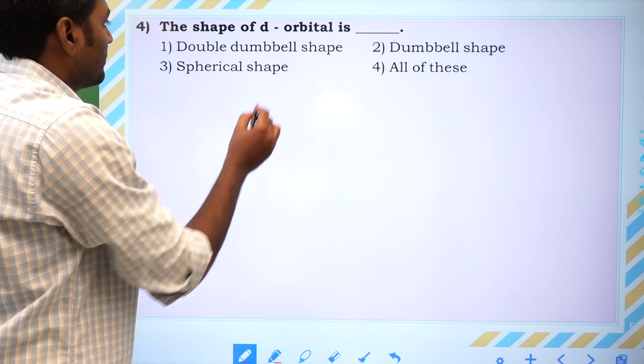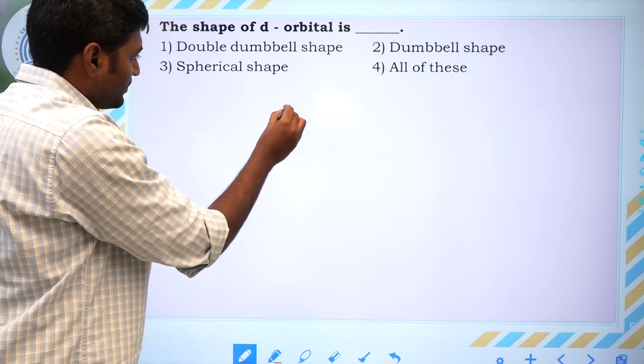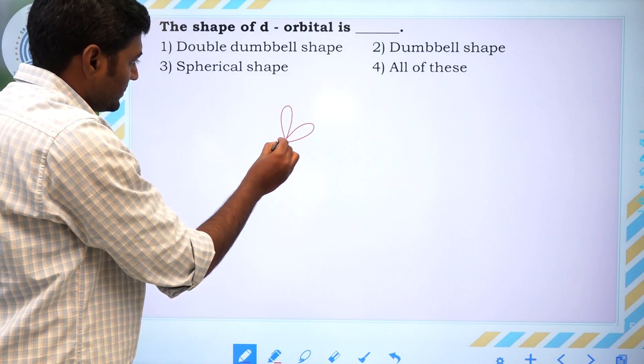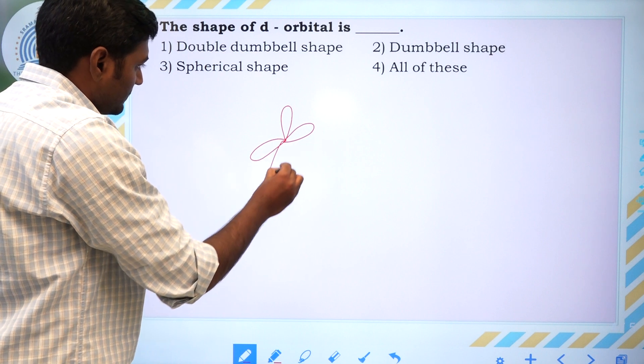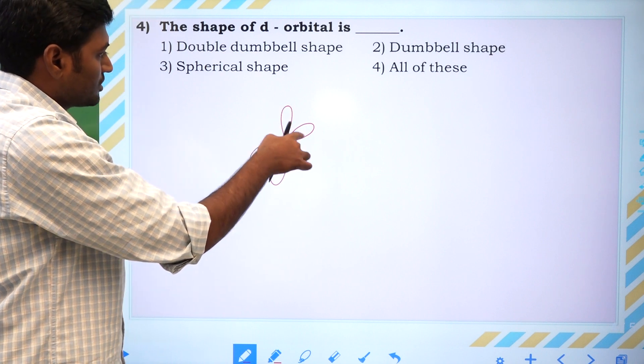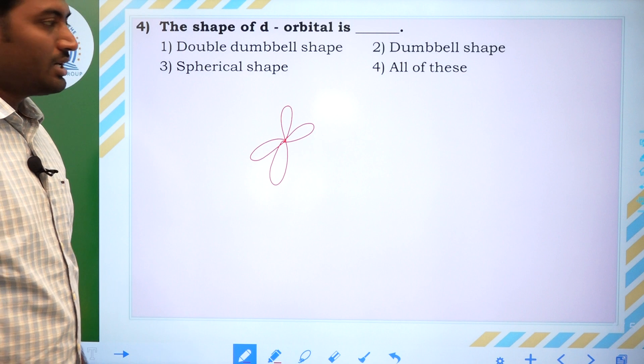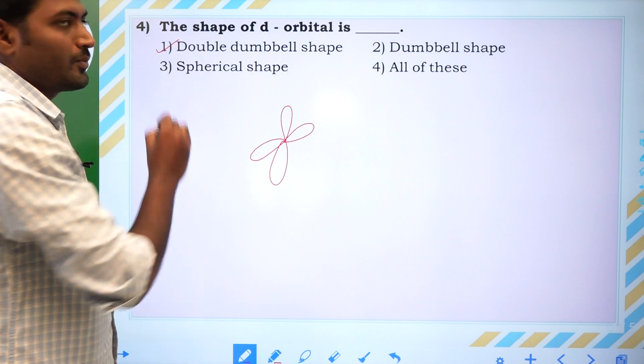We will go for next question. The shape of P orbital is, P orbital shape is like this. D orbital shape is, it looks like the two dumbbells, they have a double dumbbell shape.